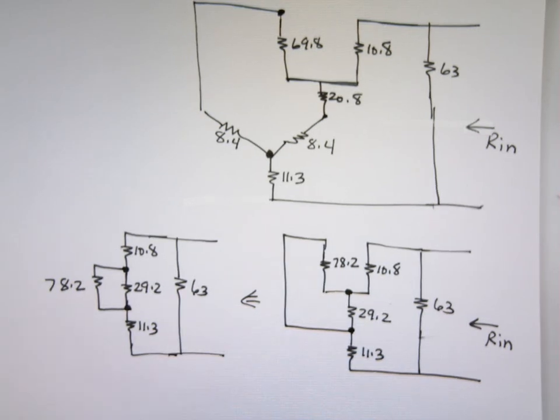So product over the sum, 79.2 times 78.2 divided by the sum of them, 79.2 plus 78.2. So product over the sum, 39.3.